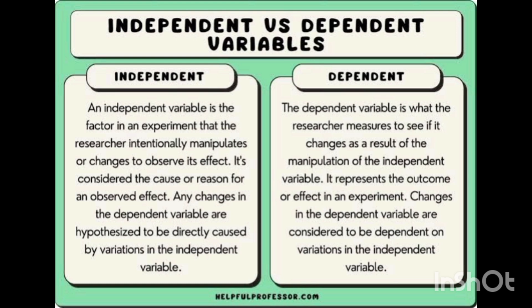The independent variable is a factor in an experiment that the researcher intentionally manipulates or changes to observe its effect. It is considered the cause or reason for an observed effect, and any changes in the dependent variable are hypothesized to be directly caused by variations in the independent variable. The dependent variable is what the researcher measures to see if changes result from the manipulation.